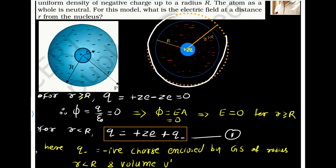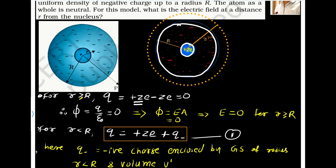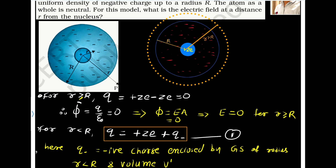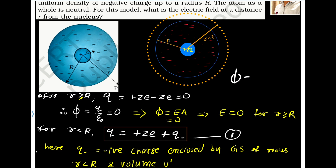If I consider this Gaussian surface, the charge enclosed in this surface is 0. Because plus Ze charge is enclosed in the nucleus and minus Ze is distributed in the sphere, so the total charge enclosed is 0. The electric flux is Q by epsilon naught, so Q is 0, therefore flux is 0. We know that flux equals E into A, but flux is 0, so E equals 0.